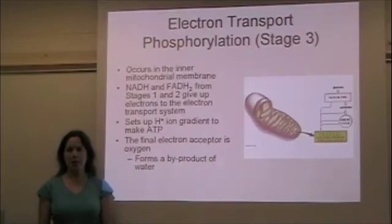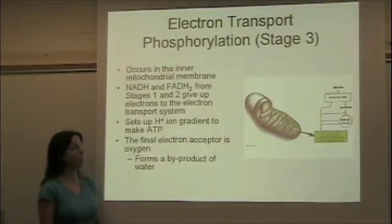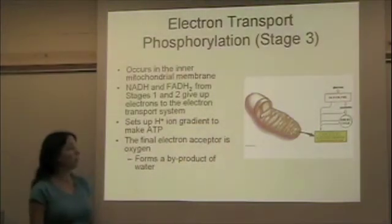The last and final part of aerobic respiration is called electron transport phosphorylation. Basically, it's a fancy electron transport chain. The electron transport chain is located in the inner mitochondrial membrane.